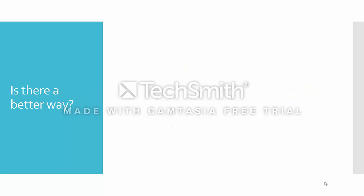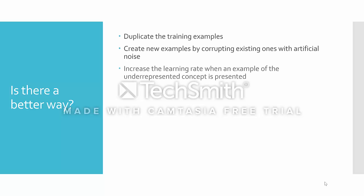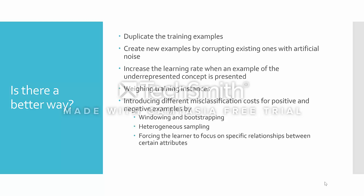So is there a better way to create the training set when available data is imbalanced? There are several approaches introduced throughout the literature — for example, duplicating the underrepresented training examples, or creating new examples by corrupting existing ones with artificial noise. Other solutions are shown as well. For this paper, an existing technique called atomic links was adapted to better select training set examples when the data is imbalanced.